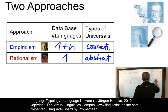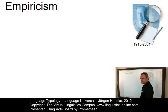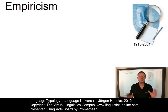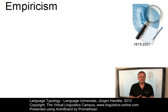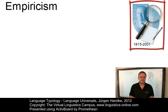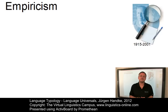Let us look at empiricism first. Some linguists have argued that in order to carry out research on language universals, it is necessary to have data from a wide range of languages. This empiricist view is most closely associated with the work of Joseph Greenberg. The resulting universals can be stated in terms of relatively concrete rather than abstract analysis.